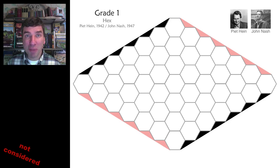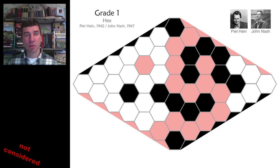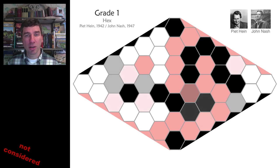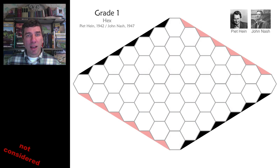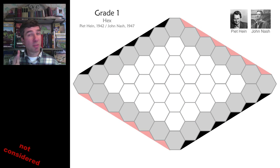One game that should have made it into the conference but was missed is the game Hex. In Hex, the pink player is trying to connect up the two pink sides of the board. The black player is trying to connect up the two black sides. Let's see how a game is played. I've modified the rules a little bit, just to make it suitable for grade 1.